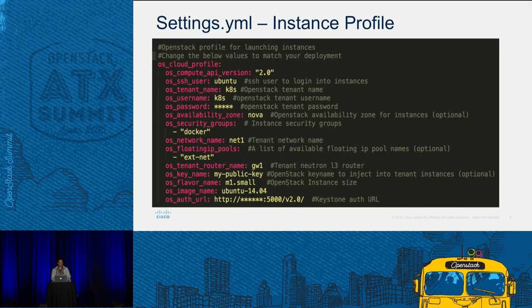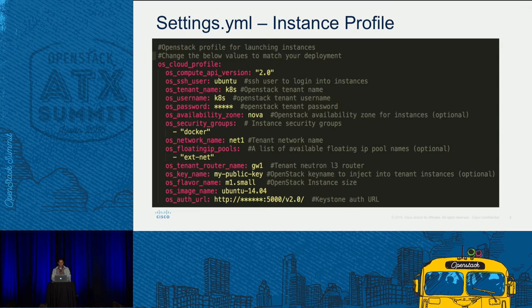Here is an example of the settings.yaml instance profile — you can look up the open source code to see the full details. This is just a snapshot. You have a simple dictionary capturing key-value information for launching your instance, such as SSH username, tenant, password, availability zone, security groups, network, floating IPs, flavor, and so on. These are essentially the inputs for the Nova API. The OS_server module talks to Nova, feeds this information, and builds out the underlying instances for our Kubernetes cluster.